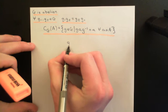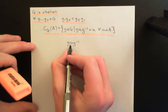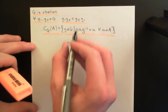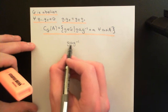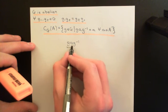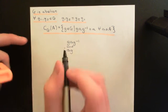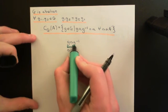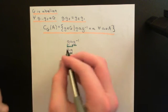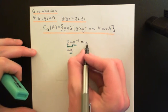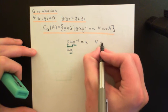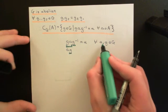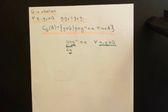If we consider g·a·g⁻¹, since little a is an element of the subset capital A and all these elements are in the group capital G, they commute with one another. So we can swap g and a to get a·g·g⁻¹. Now g and g⁻¹ cancel to produce the identity, so this equals little a — no matter what little a and little g you pick from within the group.